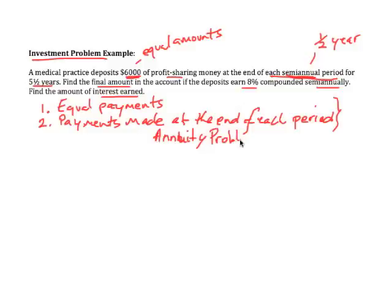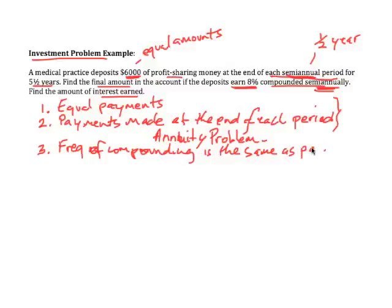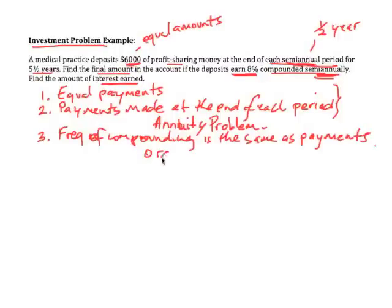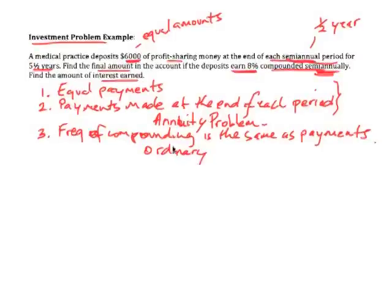We've got further things happening here in that they do this for five and a half years. We want to find the final amount in the account if the deposits earn 8% and this is compounded semiannually, same. It's the same semiannually, same period. So the third piece of information is that the frequency of compounding is the same as the payments, which it is, it's semiannually. And so this will tell us that this is an ordinary annuity.